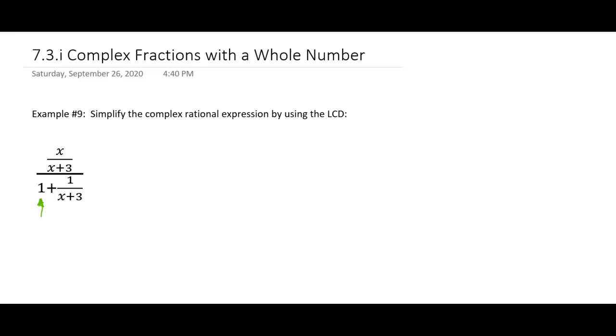All right, so looking at the denominators, we have an x plus 3 here and an x plus 3 here, but on the 1, it's really just over 1 if you want to make it a fraction. You can always make a whole number a fraction by putting it over 1. So the LCD is going to be x plus 3. That's the LCD.